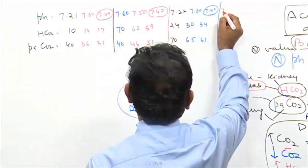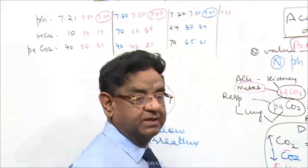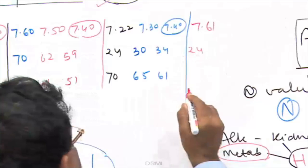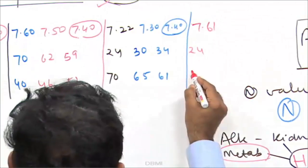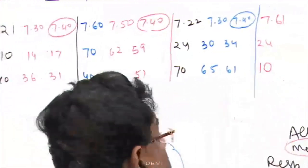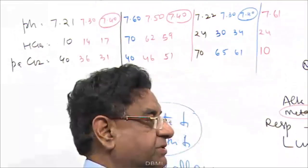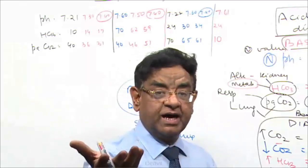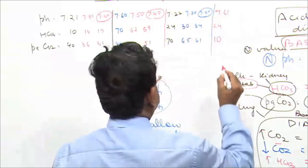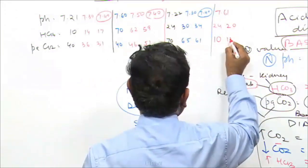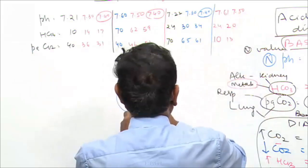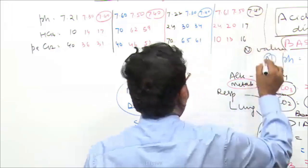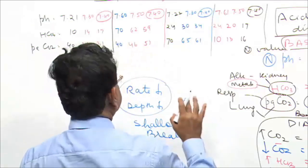One more case: pH 7.61 — alkalosis. Bicarb is 24, normal. CO2 is 10 — this is a case of respiratory alkalosis. Kidney is going to help by throwing out alkali. Bicarbonate drops from 24 to 20 to 16, CO2 adjusts, and pH returns to 7.40 — compensated.